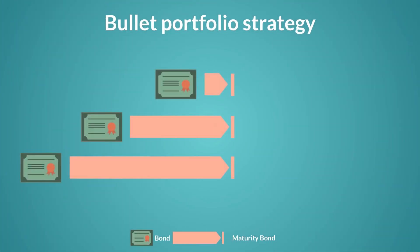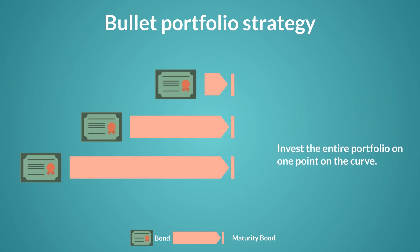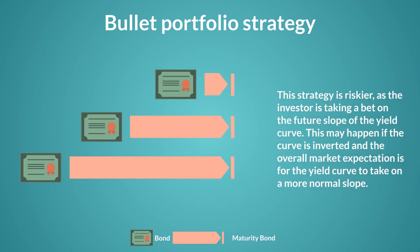An investor can employ a bullet strategy and just invest the entire portfolio in one point on the curve. This strategy is riskier as the investor is taking a bet on the future slope of the yield curve. This may happen if the curve is inverted and the overall market expectation is for the yield curve to take on a more normal slope. In this case, the investor wants to lock in a nice yield at the high point on the curve before overall yields decrease.